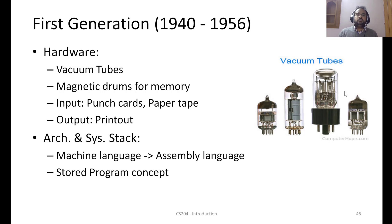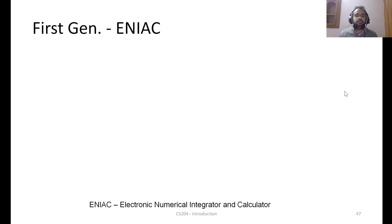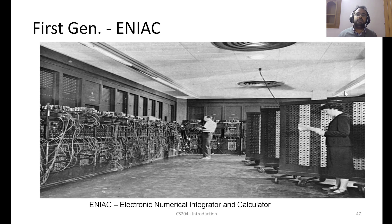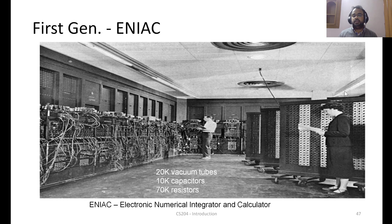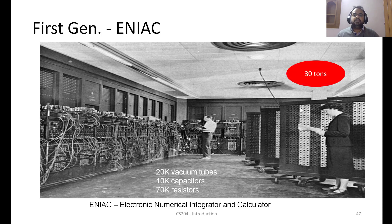During this period, the stored program concept was also developed. The first supercomputer, ENIAC, had about 100,000 components — 20,000 vacuum tubes, 10,000 capacitors, and 70,000 resistors. A couple of people are visible operating it; it was that huge. Its estimated size was nearly 30 tons.